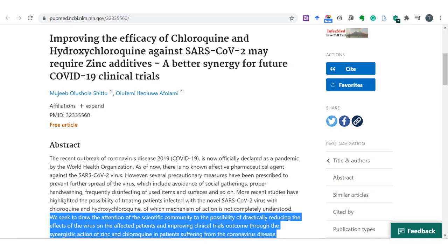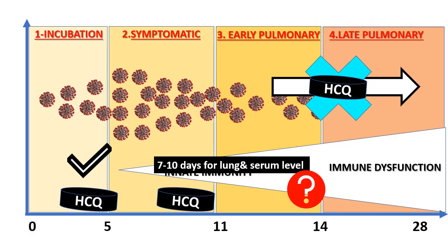Nowadays, there are many articles suggesting starting zinc along with HCQ for SARS-CoV-2, especially in the very early phase. To conclude: if you are using HCQ in the early phase — within two days of symptoms or as prophylaxis — it is going to help. If used in the later phase, it is not going to help. And if used in between, because of the peculiar pharmacokinetics of HCQ — which takes at least seven to ten days to achieve lung or serum levels — the benefit during that phase is in doubt. Thank you.